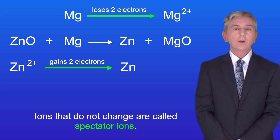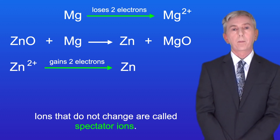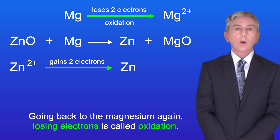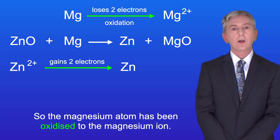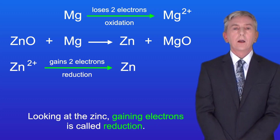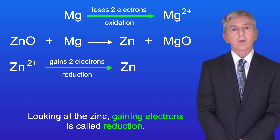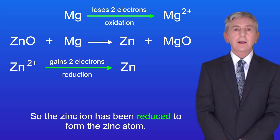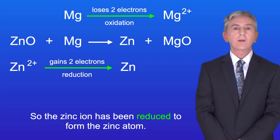Ions that do not change are called spectator ions. Going back to the magnesium again, losing electrons is called oxidation, so the magnesium atom has been oxidised to the magnesium ion. Looking at the zinc, gaining electrons is called reduction, so the zinc ion has been reduced to form the zinc atom.